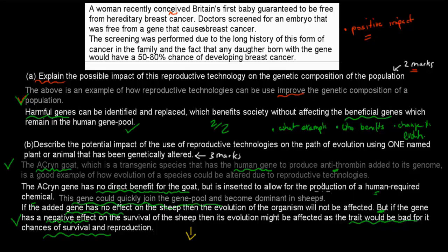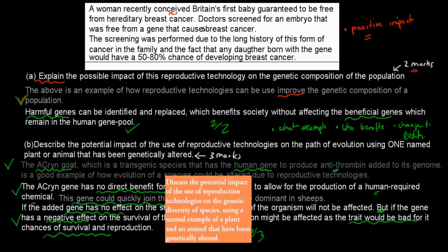So that's what you should have focused on: talk about the example, talk about whether the gene is a benefit to the organism — in this case it's neutral, but it could possibly be bad — and then talk about what happens if it's bad, which is that evolution will be negatively affected. That's a three-mark question. These questions came from the learning objective: discuss the potential impact of the use of reproductive technologies on the genetic diversity of species, using a named example of a plant and animal that have been genetically altered.